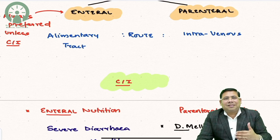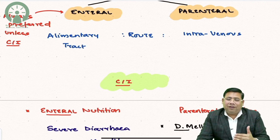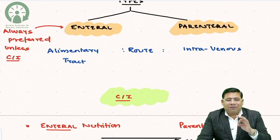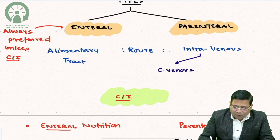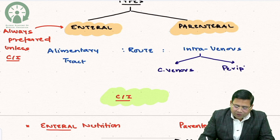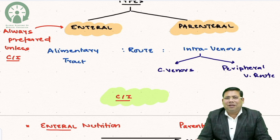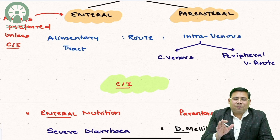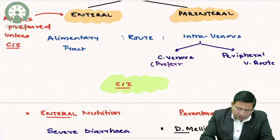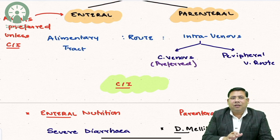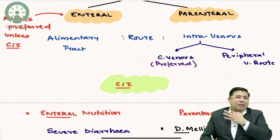Parenteral nutrition is the delivery of nutrition via the intravenous route in elemental form. The intravenous route can be central venous or peripheral venous. The peripheral venous route is easily accessible but has a major drawback: severe thrombophlebitis. The central venous route does not carry the risk of thrombophlebitis, and therefore the central venous route is preferred for parenteral nutrition.